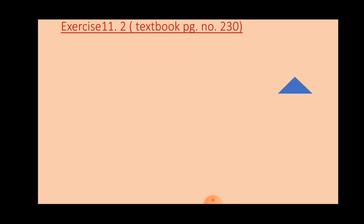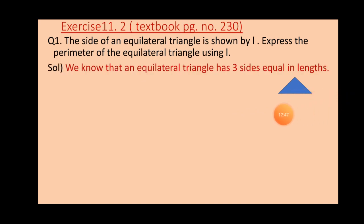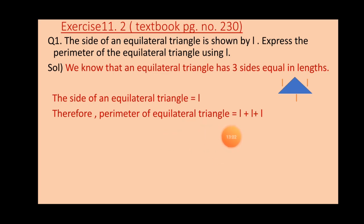Now let us come to the exercise questions from textbook page 230. Question 1: The side of an equilateral triangle is shown by l; express the perimeter using l. An equilateral triangle has three equal sides, each represented by l. So its perimeter is given by taking the sum of all three sides: l + l + l = 3l.